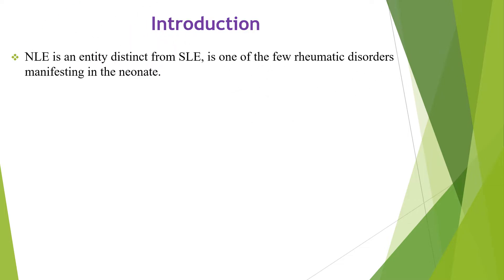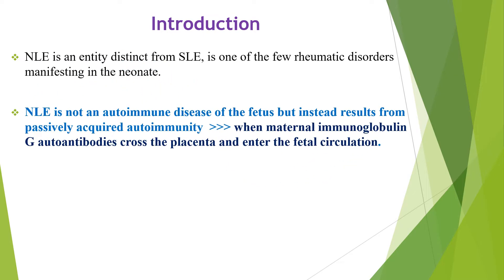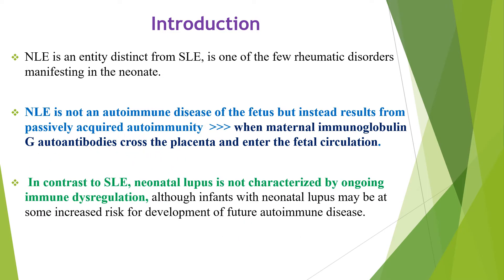Neonatal lupus is an entity distinct from SLE, which is one of a few rheumatic disorders manifesting in the neonate. Neonatal lupus is not an autoimmune disease of the fetus, but instead results from passively acquired autoimmunity when maternal immunoglobulin G antibodies cross the placenta and enter the fetal circulation. In contrast to SLE, neonatal lupus is not characterized by ongoing immune dysregulation, although infants with neonatal lupus might be at some increased risk for development of future autoimmune disease.